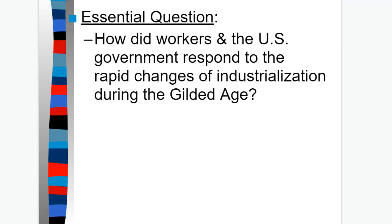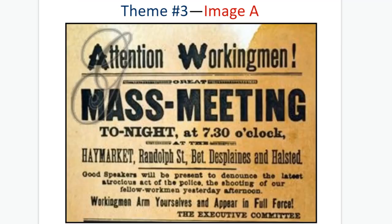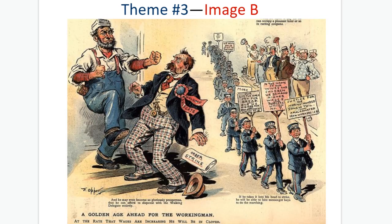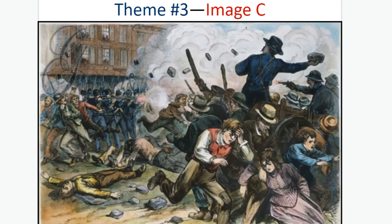As we go into our last section, the essential question is: how did workers and the United States government respond to the rapid changes of industrialization during the Gilded Age? Theme 3, Image A. Theme 3, Image B. Theme 3, Image C.